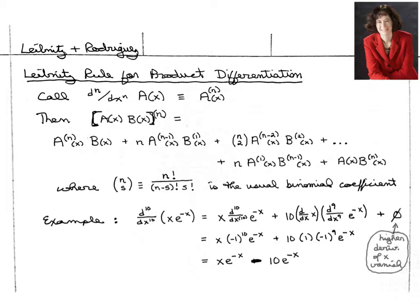In the second term, we would say, well, we'll act 9 derivatives on e to the minus x and only 1 derivative on x, and then the binomial coefficient is 10 in this case, since n equals 10.